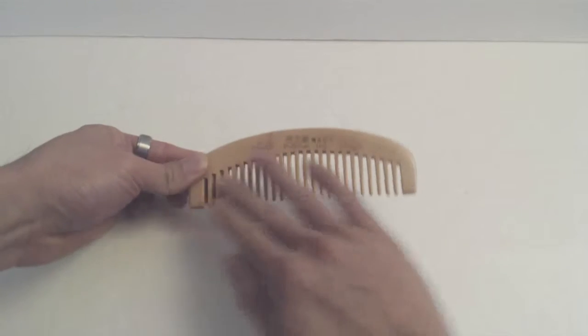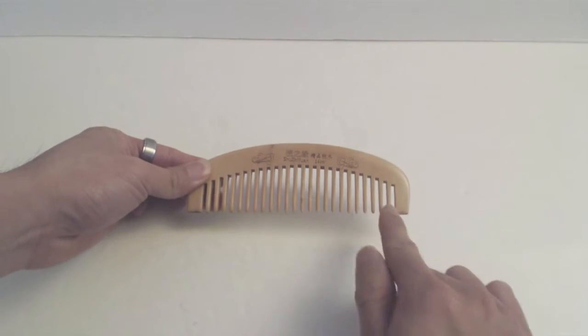This is the comb. It measures just over 6 inches long, is 2 inches tall, and has 24 teeth.